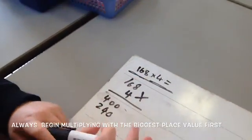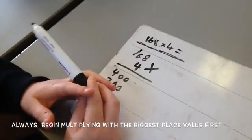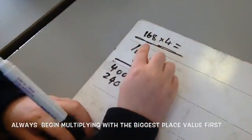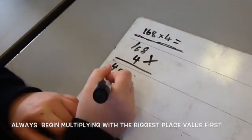Then you need to do 8 times 4. If you want to help yourself, you can tap on it. 8 times 4 equals 32.